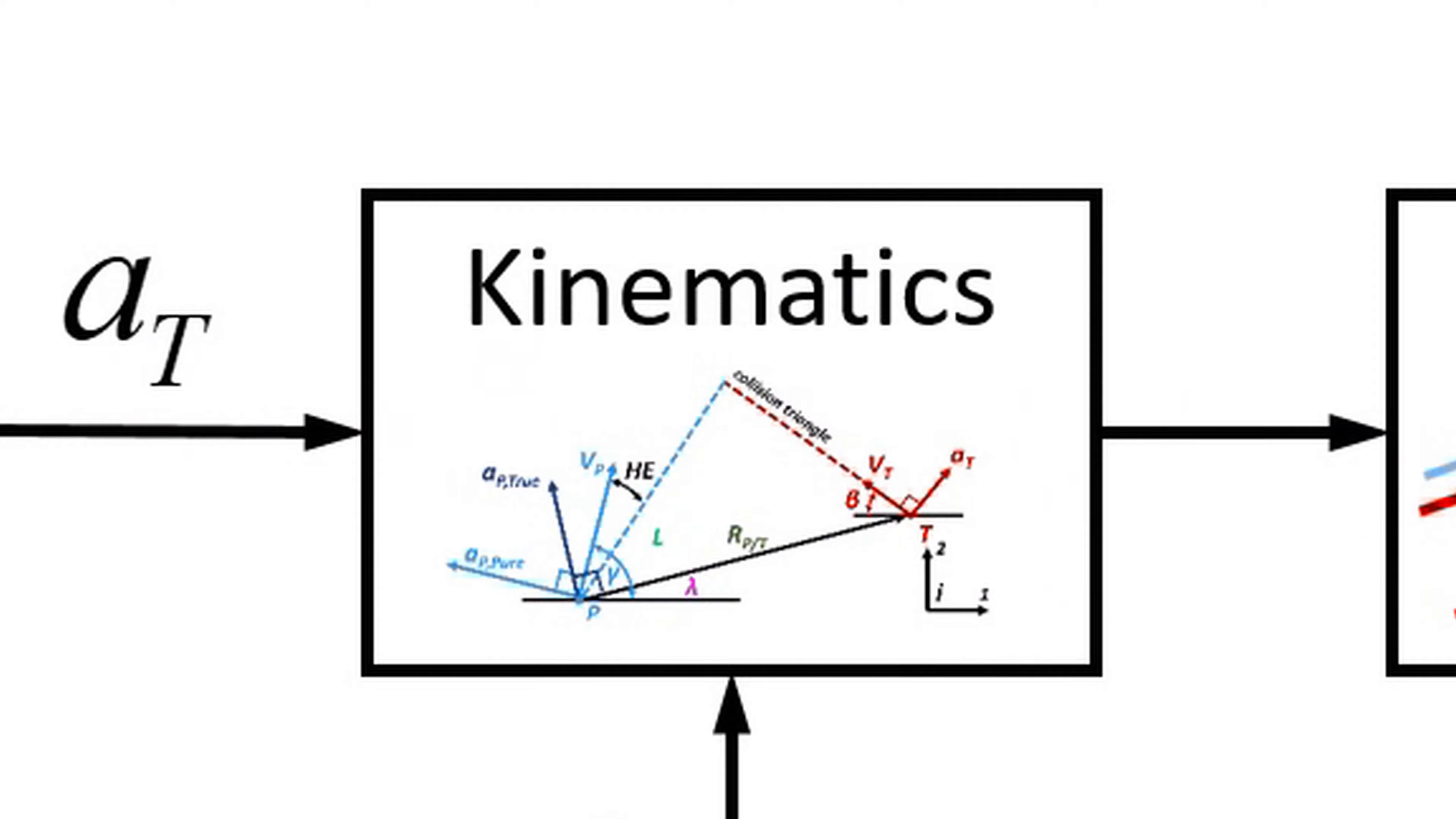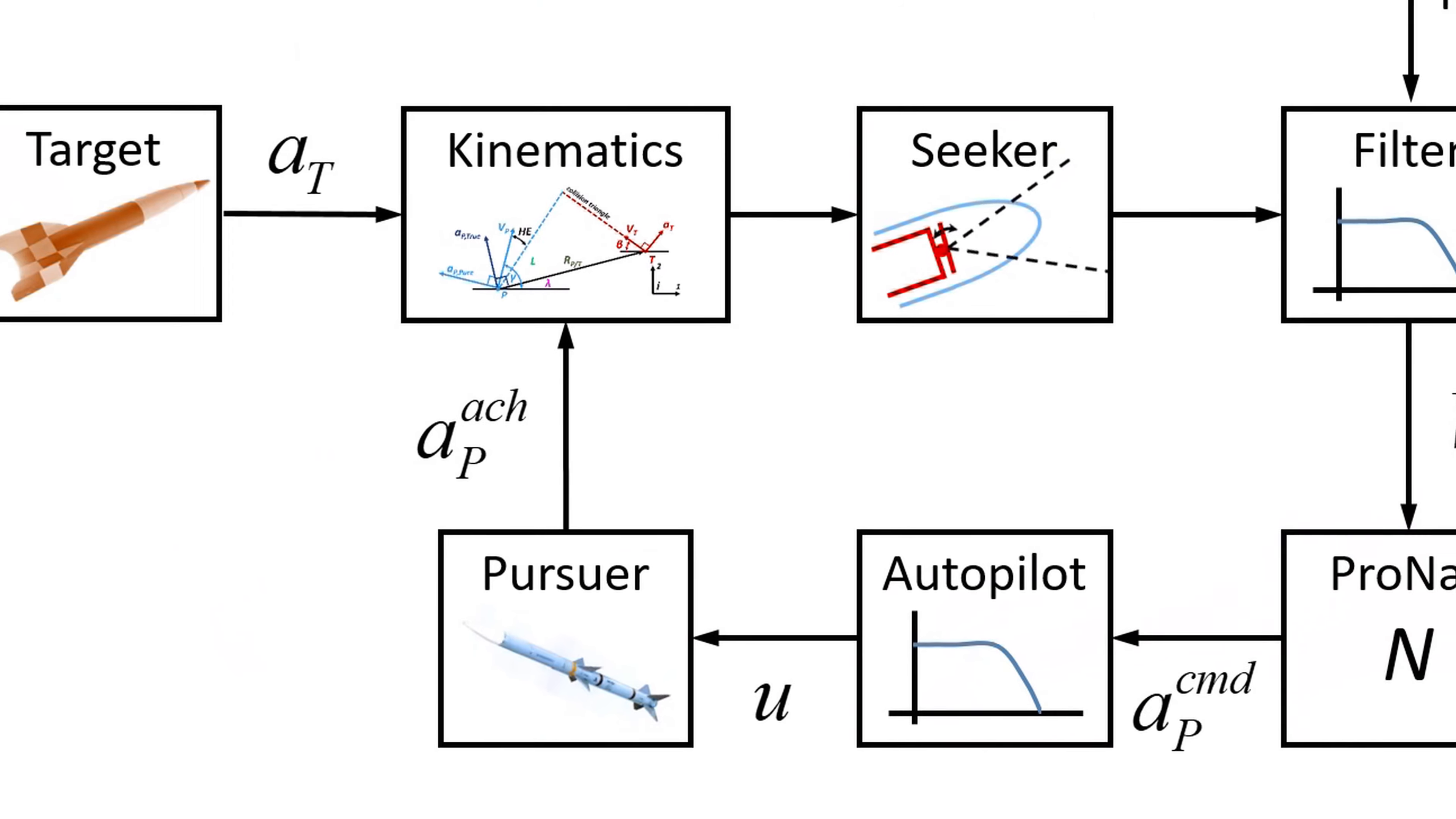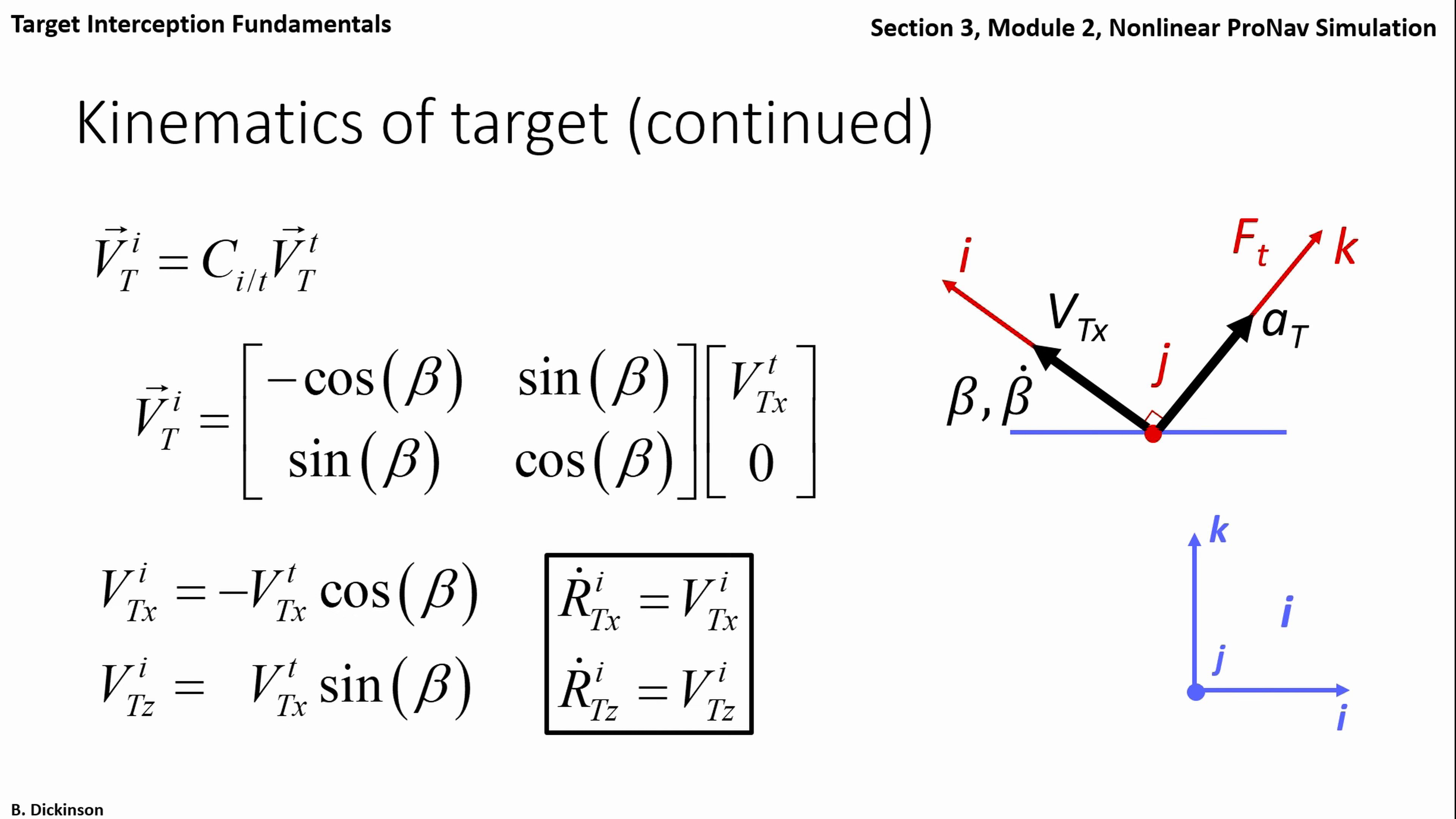the homing loop, how pro-nav is implemented in a feedback process to achieve collision, derivation of 2D kinematics, how to mathematically describe intercept behaviors.